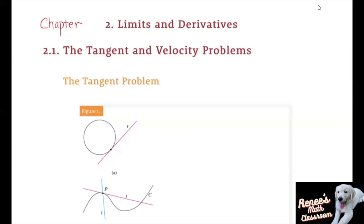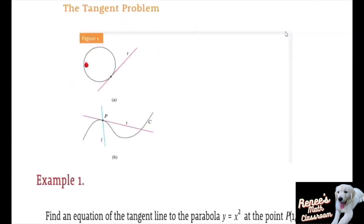But how can this idea be precise? For a circle, we could simply follow Euclid and say that a tangent is a line that intersects the circle once and only once. However, for a more complicated curve such as this one, this definition is inadequate.